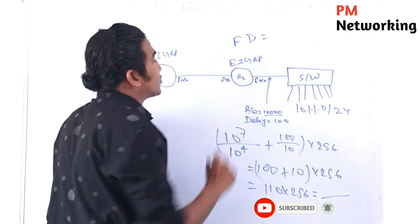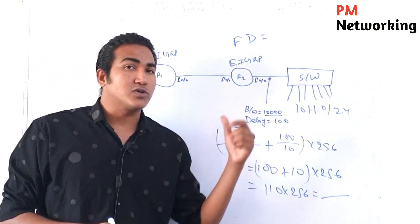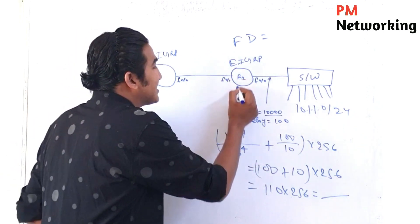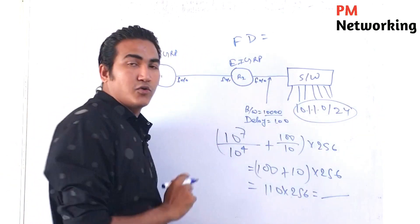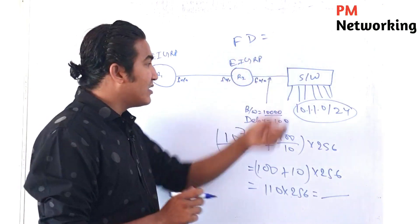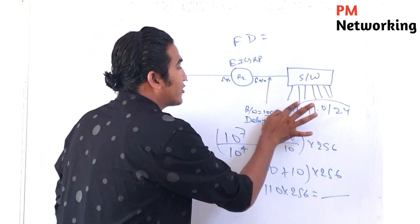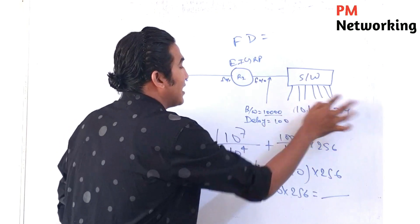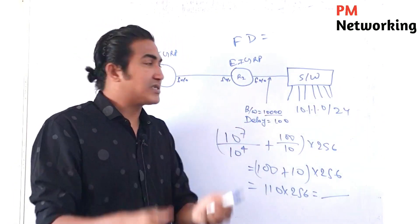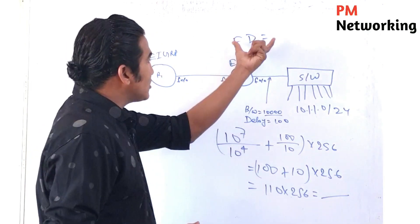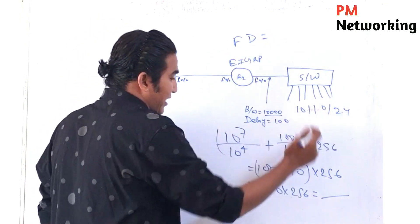Feasible Distance means the total distance from source to destination. The total distance to reach this network from R2 is known as FD. So R2 calculates its FD for this network, and whatever value it gets becomes the FD.